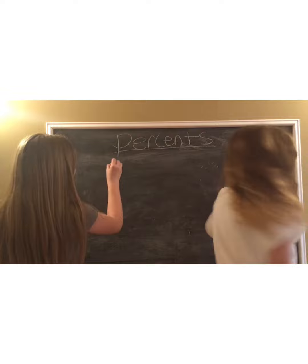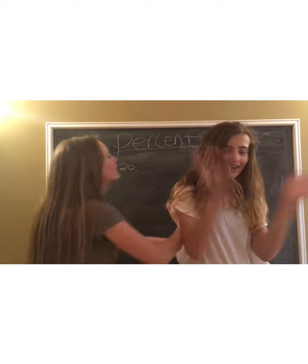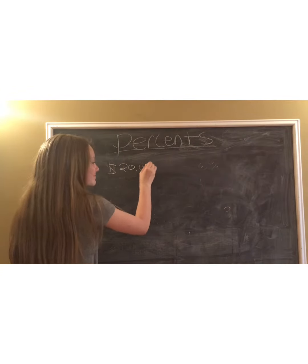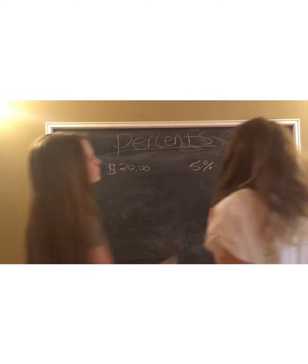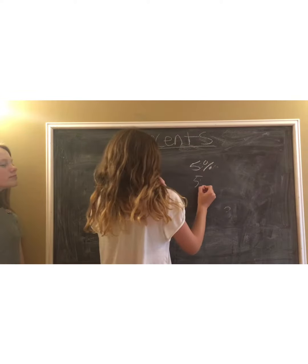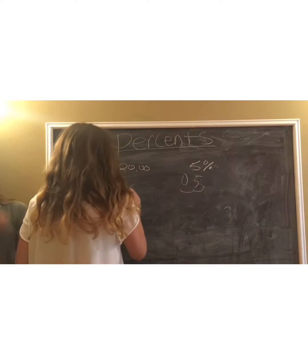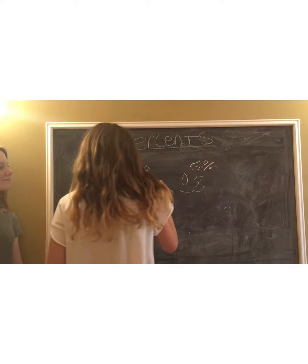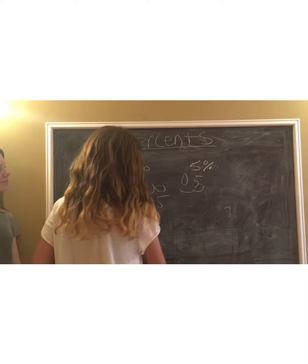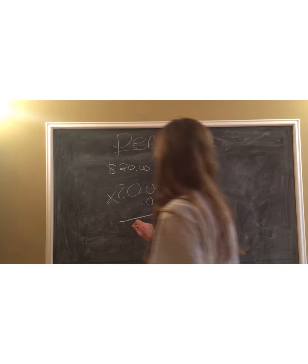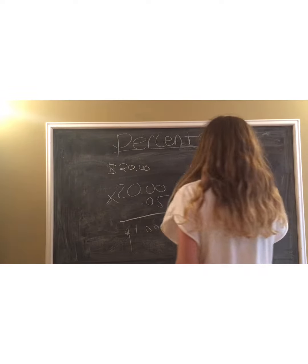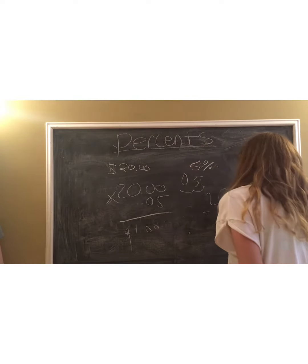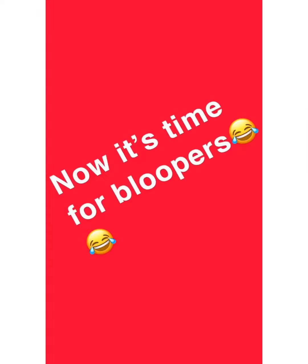We have another example for you! Say you were going to Chipotle and you bought a $20 meal with a 5% discount. You take your 5%, add a decimal, move it over 2 places, and add a 0, making it .05. Then you do $20 times .05, which equals $1. Then you do $20 minus $1, which is $19 — your new price.